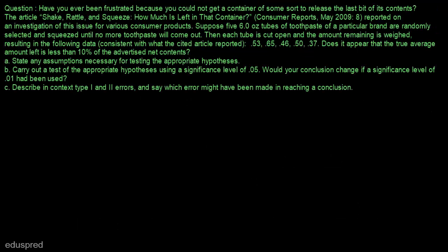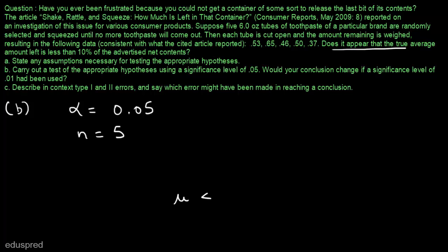Let's move to part b. In part b, we have to carry out a test of the appropriate hypothesis using a significance level of 0.05. Alpha is equal to 0.05 and n is equal to 5. We need to test whether the true average amount left is less than 10% of the advertised net contents, i.e., mu less than 10. The counter claim is mu greater than or equal to 10. So the null hypothesis is mu ≥ 10 and the alternate hypothesis is mu < 10.